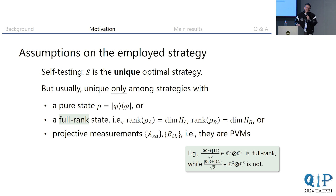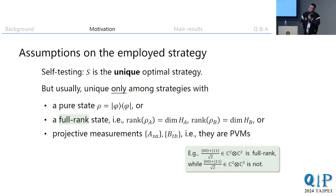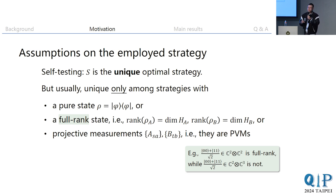If you look at the literature on self-testing, what is often the case is that people make certain assumptions about the strategy employed by Alice and Bob. In self-testing we want S to be the unique optimal strategy, but what we really prove in most cases is that S is unique only among certain strategies — for example, assuming the shared state is pure, has full rank, or that the measurements are projective. These are the common assumptions made in the literature.